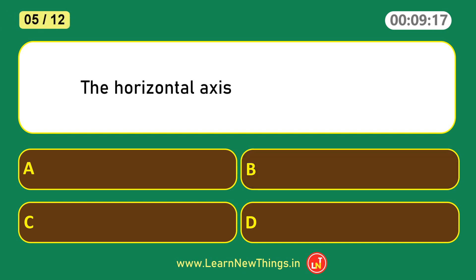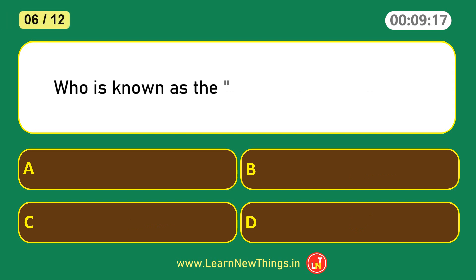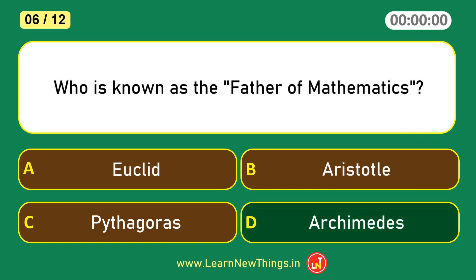The horizontal axis of a graph is called the x-axis. Who is known as the father of mathematics? Archimedes.